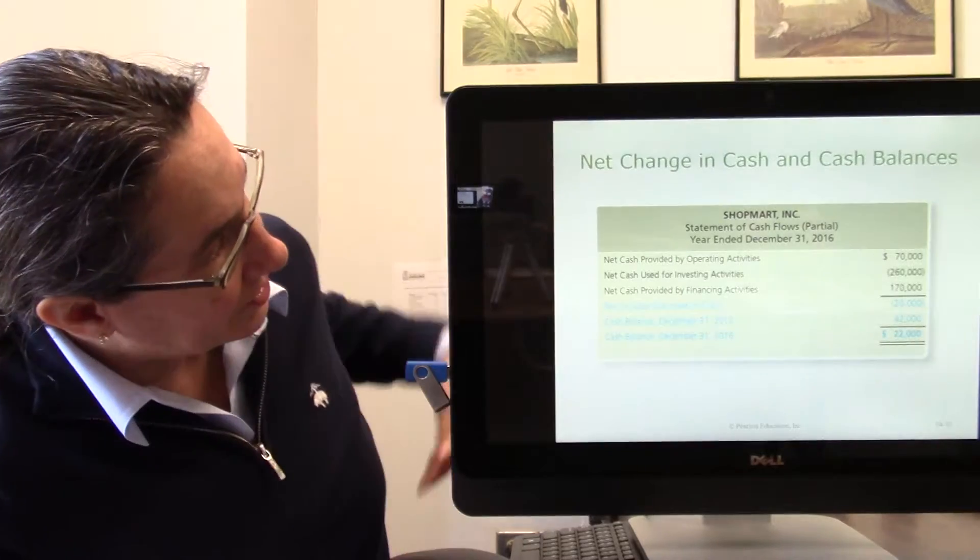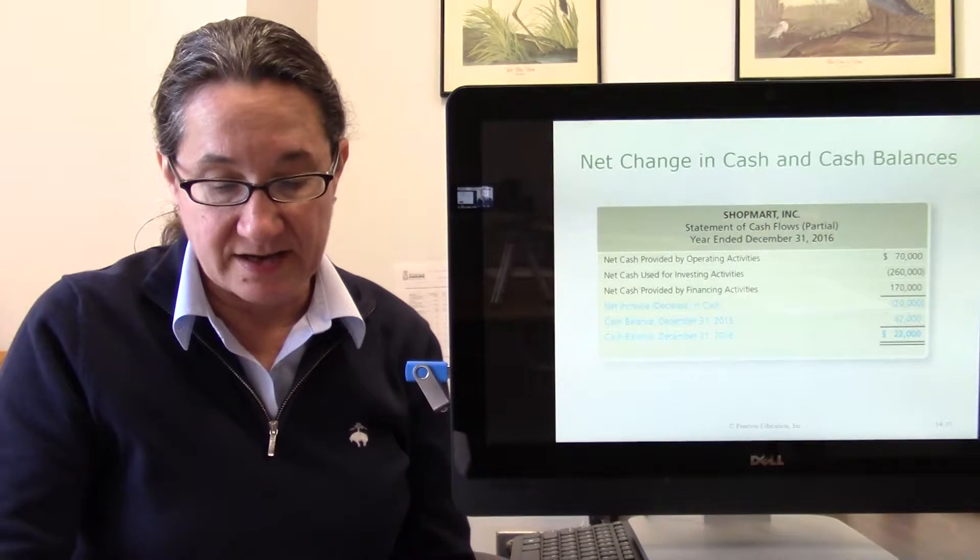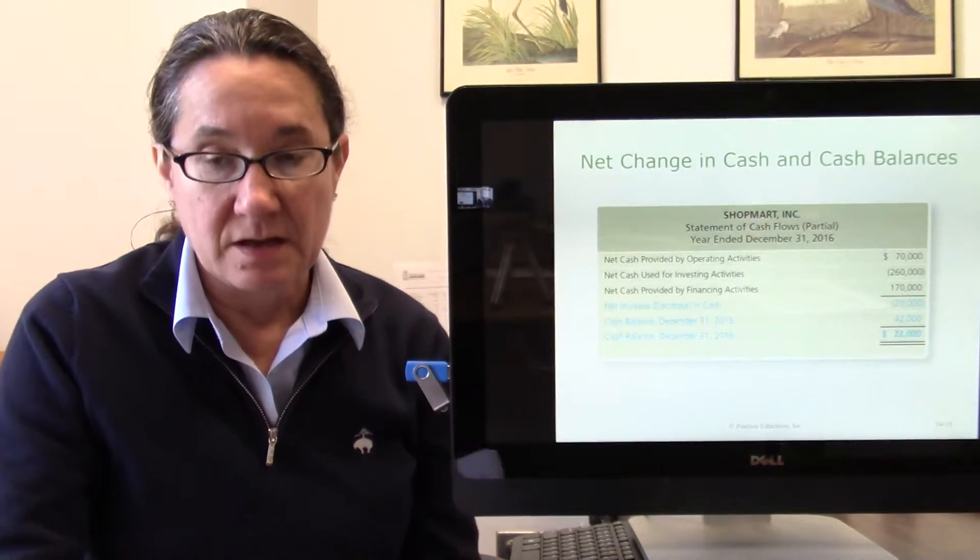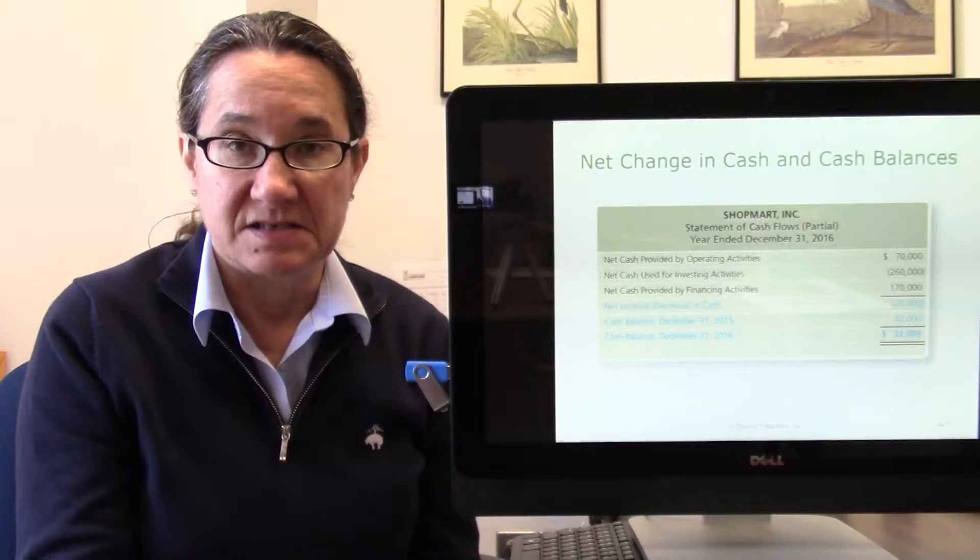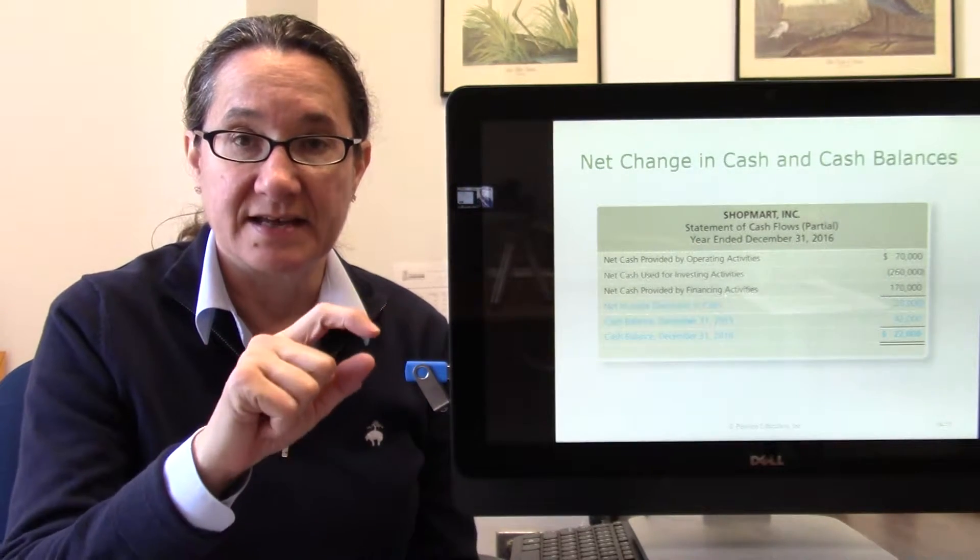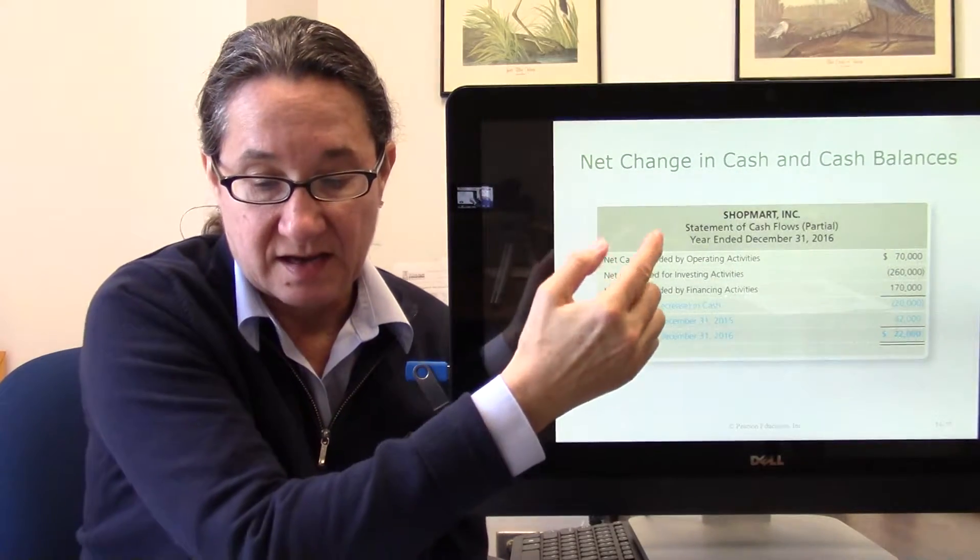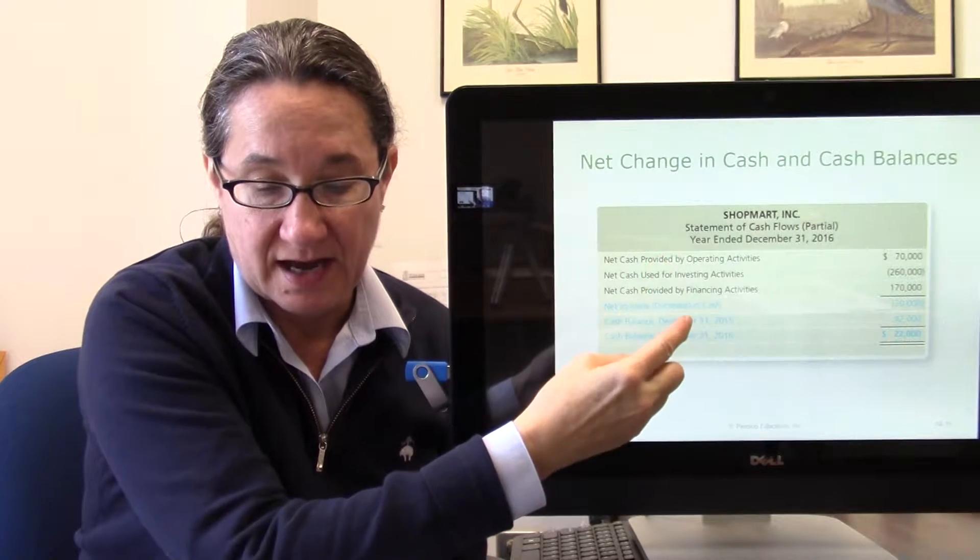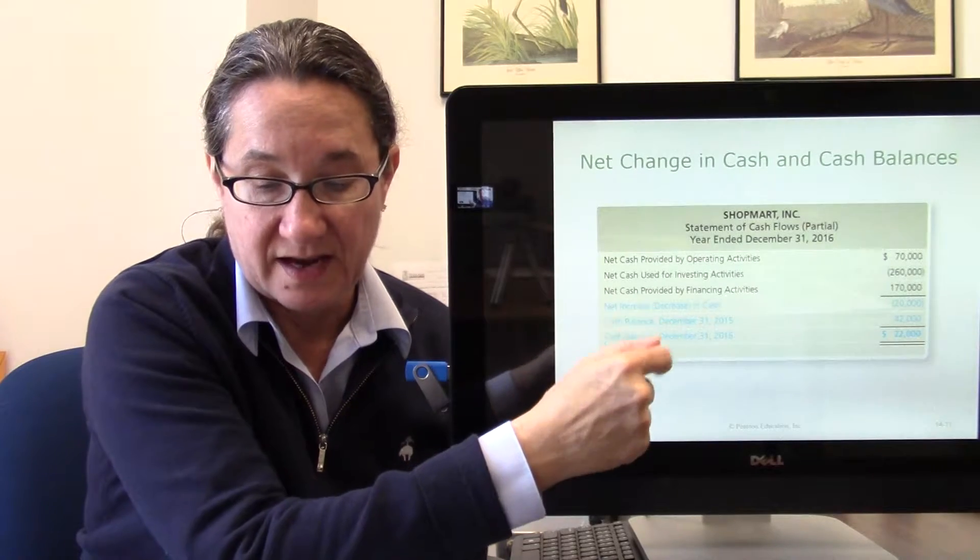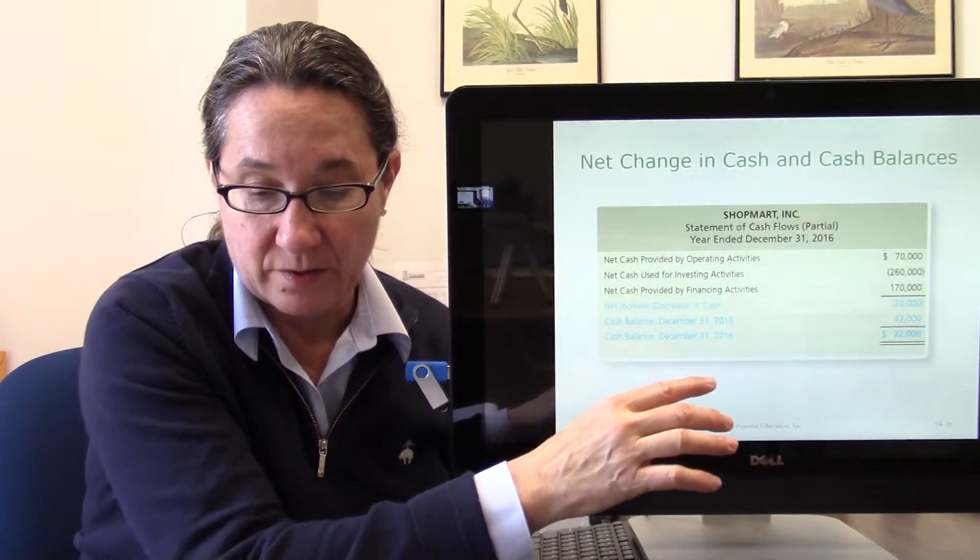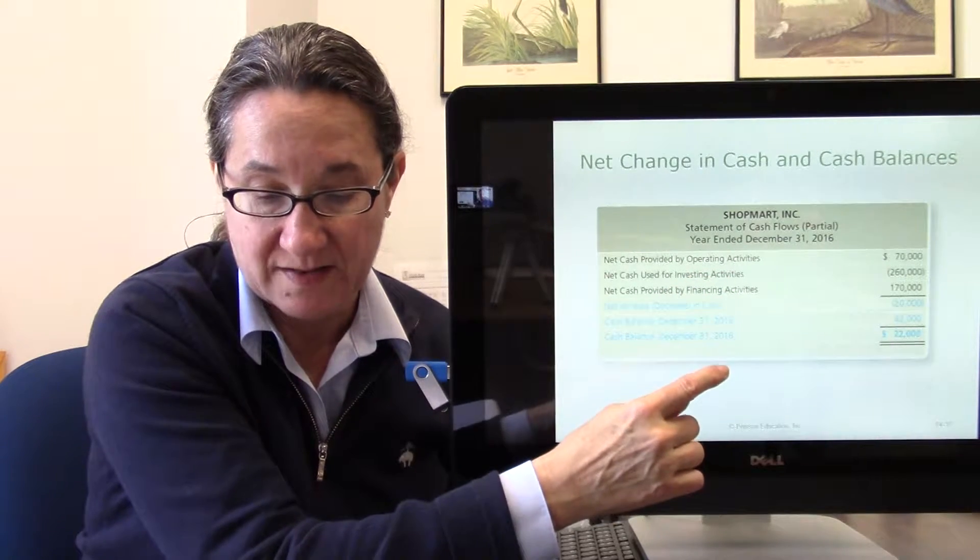Then you can calculate your net cash provided by those financing activities. Once you've figured out your operating, investing and financing activities, now you're ready to look at the change. Because that's what we're doing. We're trying to take last year's cash see how it relates to this year's cash as affected by net income. You take cash provided by operating, cash used for investing, and cash provided by financing. The net of those 70,000 minus 260 plus 170 equals negative 20,000.